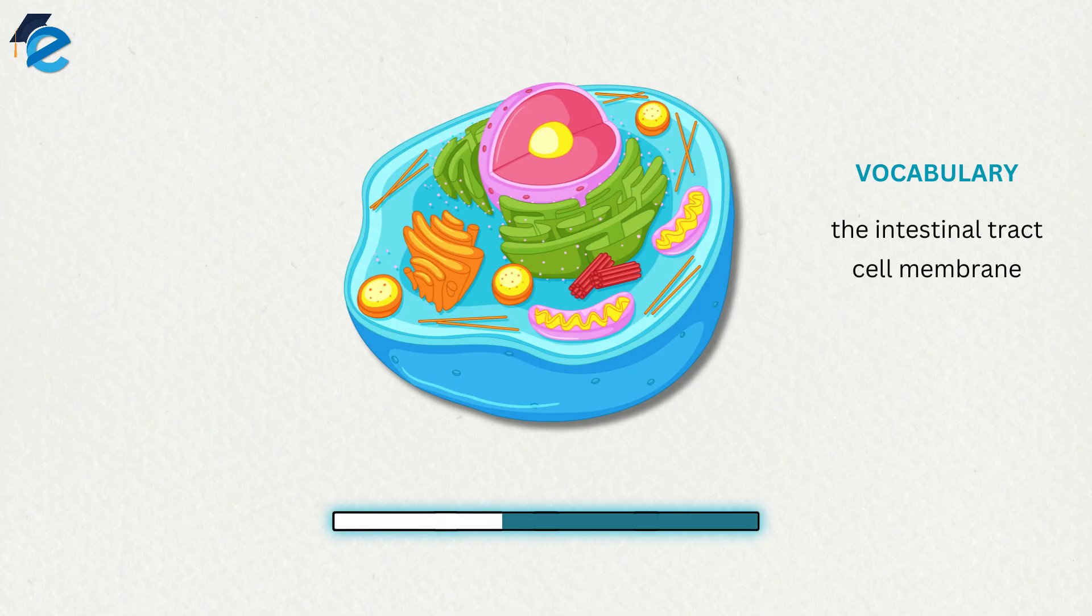The intestinal tract, for example, is home to even more bacteria cells than the total of all human cells in the body. Yet, these bacteria are outside the body and cannot be allowed to circulate freely inside the body.